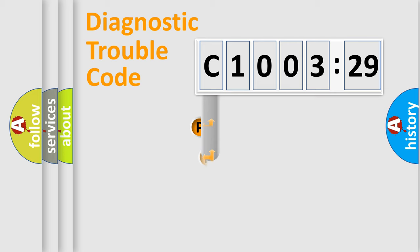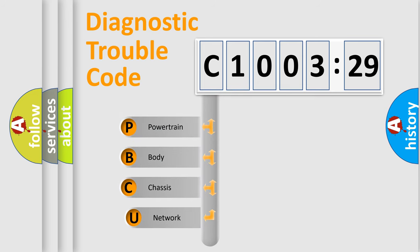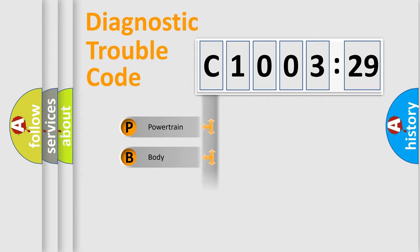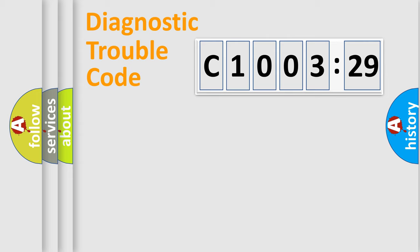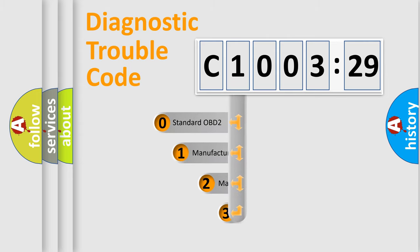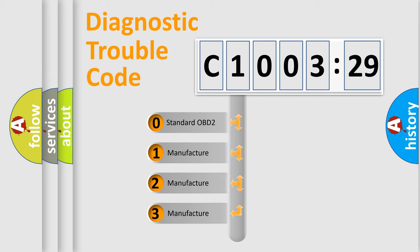First, let's look at the history of diagnostic fault code composition according to the OBD2 protocol, which is unified for all automakers since 2000. We divide the electric system of an automobile into four basic units: Powertrain, Body, Chassis, and Network. This distribution is defined in the first character of the code.